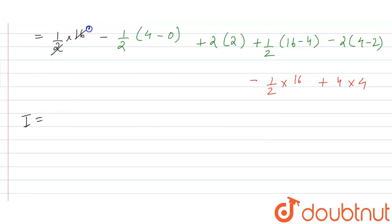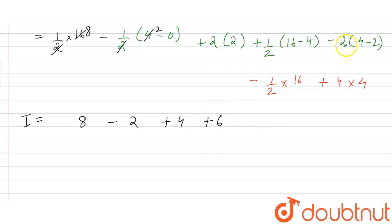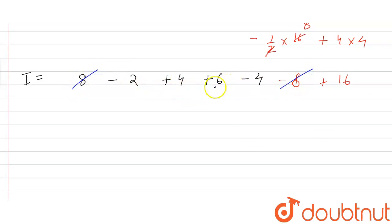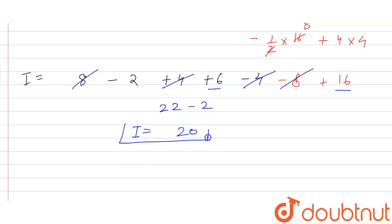So the value of I will be: 8 minus 2 plus 4, then 16 minus 4 equals minus 6, minus 2 times 2 equals minus 4. From the remaining terms: minus 8, plus 4 times 4 equals 16, giving plus 8. The plus 8 and minus 8 cancel, and the plus 4 and minus 4 cancel, leaving plus 6 plus 16 equals 22 minus 2, which equals 20. So the value of I is equal to 20.